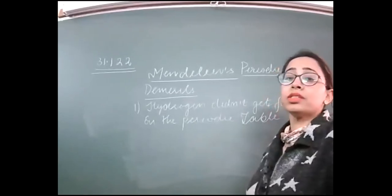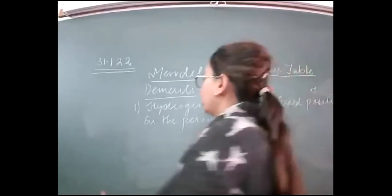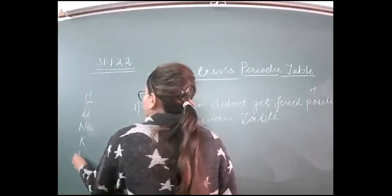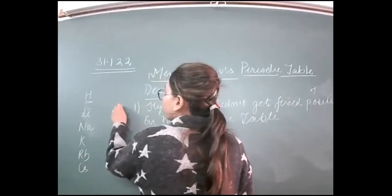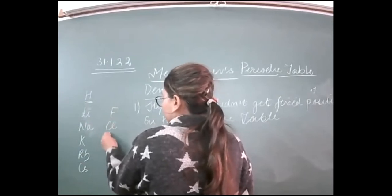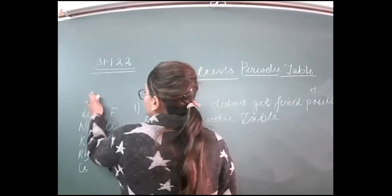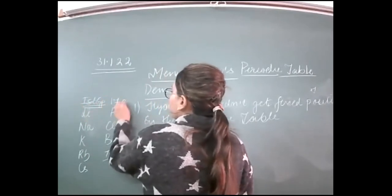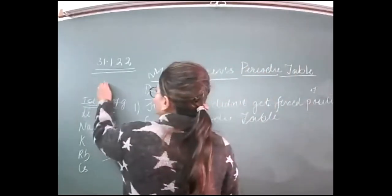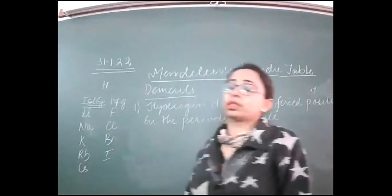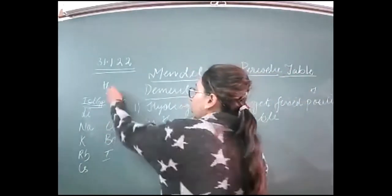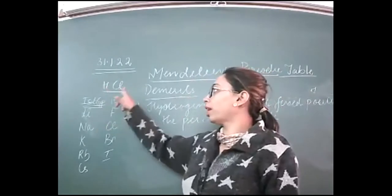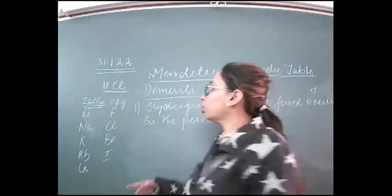Why? Because hydrogen has resemblance with both the alkali metals and the halogens. Hydrogen is like an alkali metal because it can lose one electron — for example, when hydrogen combines with chlorine it forms HCl. So hydrogen donates an electron to chlorine, behaving like an alkali metal. But hydrogen is also similar to halogens.